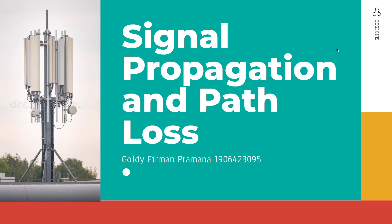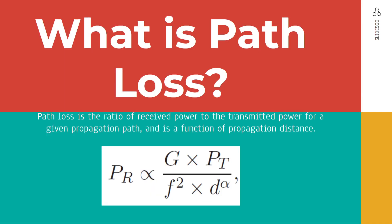Hello everyone, assalamualaikum warahmatullahi wabarakatuh. Today I want to present about signal propagation and path loss from wireless communication. We will go to path loss itself. So what is the definition of path loss? Path loss is the ratio of received power to the transmitted power for a given propagation path, and is a function of propagation distance.